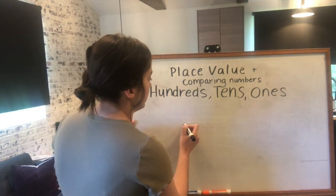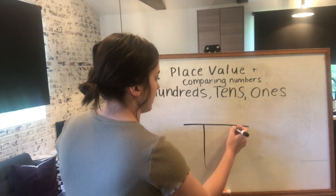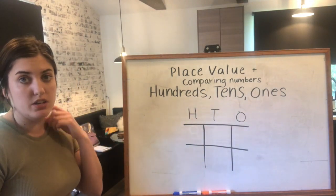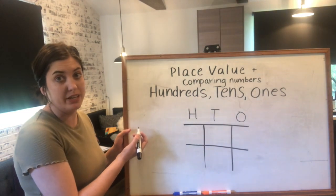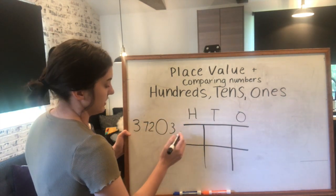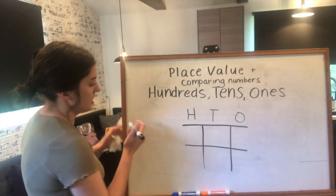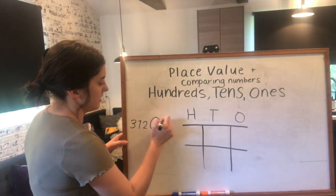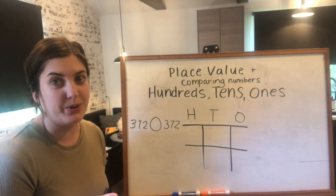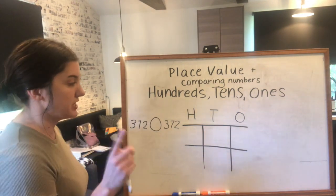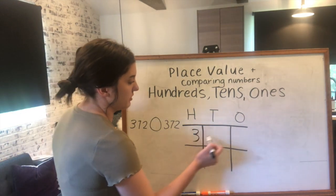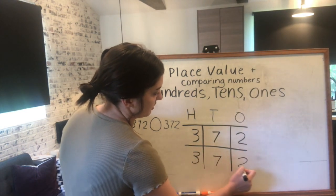Let's do one more example. We'll draw our place value chart again with hundreds, tens, and ones and a line to separate both numbers. This time the numbers are 372 and 372. If you have a guess, you can write it down now, but we'll still go through the problem — it's always safe to double-check your answer.